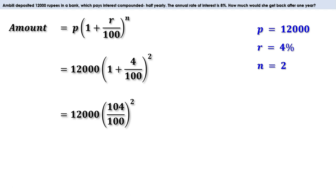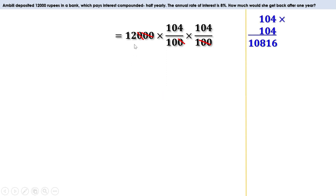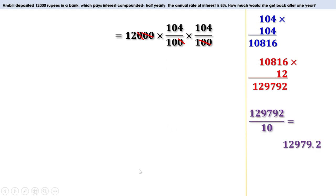(104 by 100) squared is 104 by 100 into 104 by 100, so we write 12,000 into 104 by 100 into 104 by 100. Cancelling zeros from numerator and denominator, we get 12 into 104 into 104 divided by 10. Multiplying 104 by 104 then by 12, we get 1,29,792. Dividing by 10 gives 12,979.2 — that is 12,979 rupees and 20 paise. Rounding, the amount after one year is 12,979 rupees.